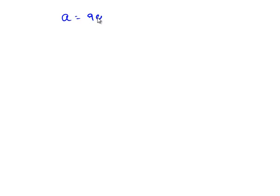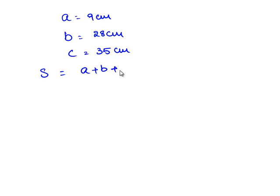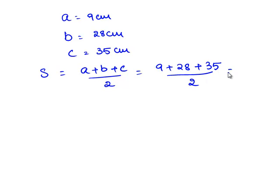From the figure, the sides of the triangle are: A is equal to 9 cm, B is equal to 28 cm, and C is equal to 35 cm. Now let us find the semi-perimeter S, which is (A plus B plus C) divided by 2, that is equal to (9 plus 28 plus 35) divided by 2, which is equal to 36 cm.